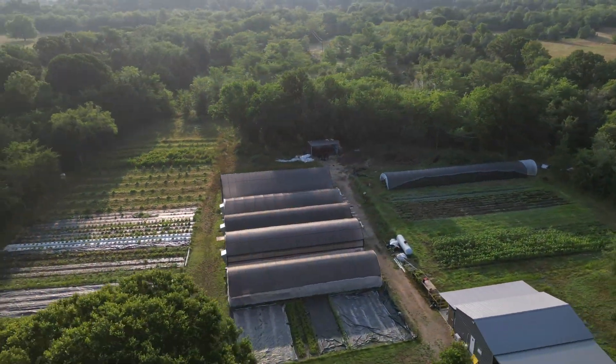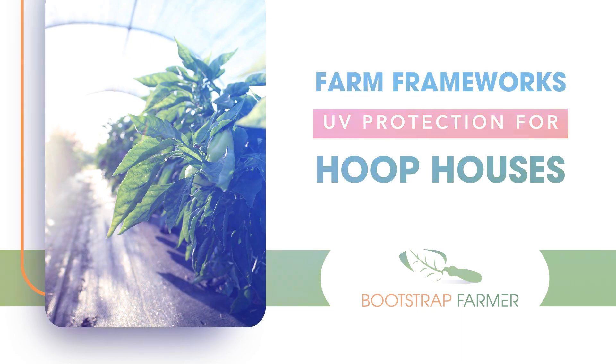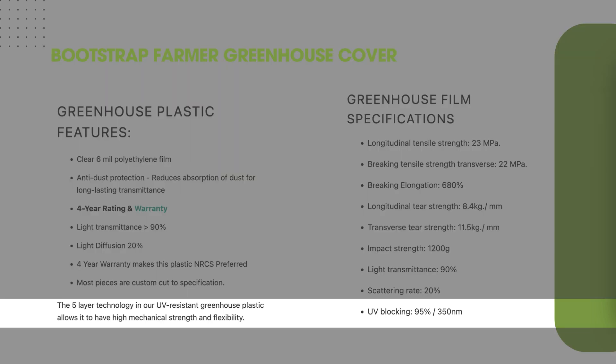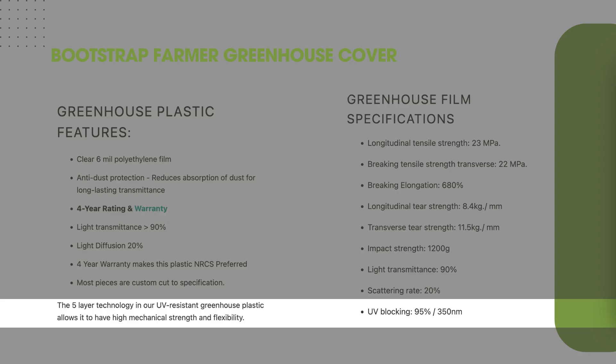Hey folks, my name is Nick, and today we're going to talk about how ultraviolet light affects greenhouse plastic, plants, and people. The first thing I want to cover is Bootstrap Farmers' listing, which lists two things in the features and specifications. There's something that says how five-layer technology in our UV-resistant greenhouse plastic allows it to have mechanical strength and flexibility. And on the specification sheet, it says that it's blocking 95% at 350 nanometers. What does that even mean?